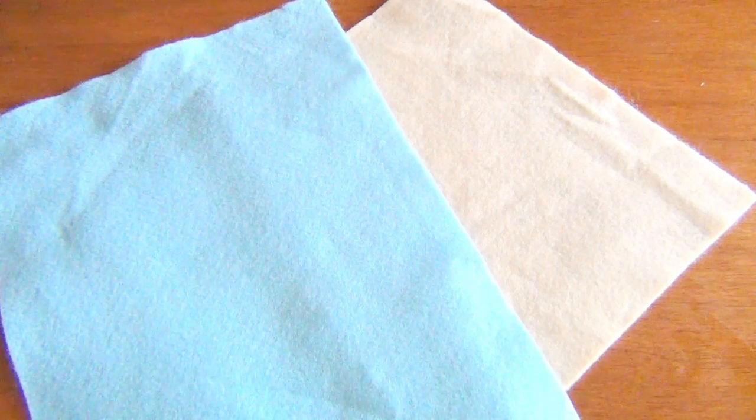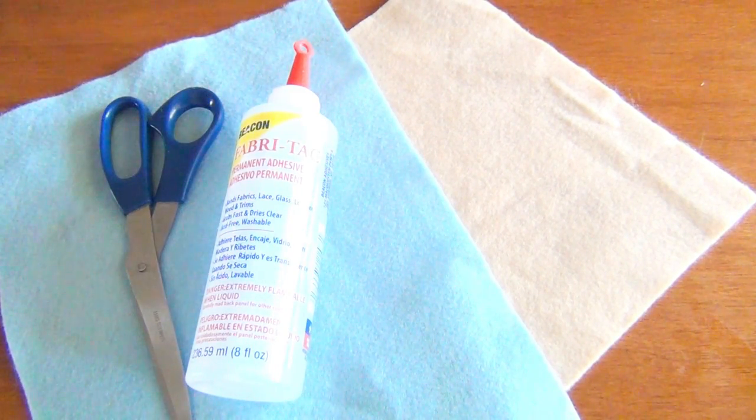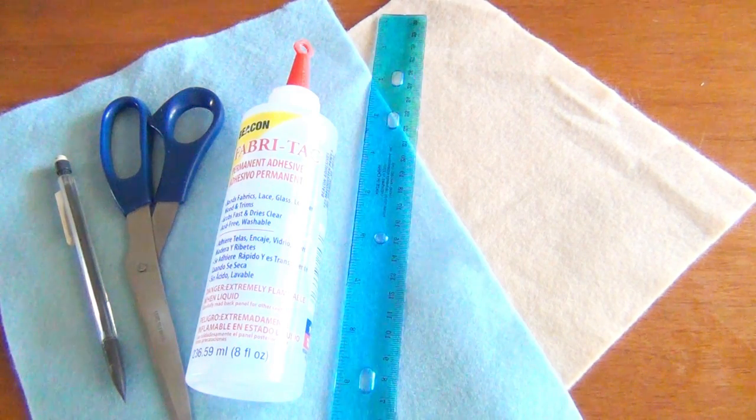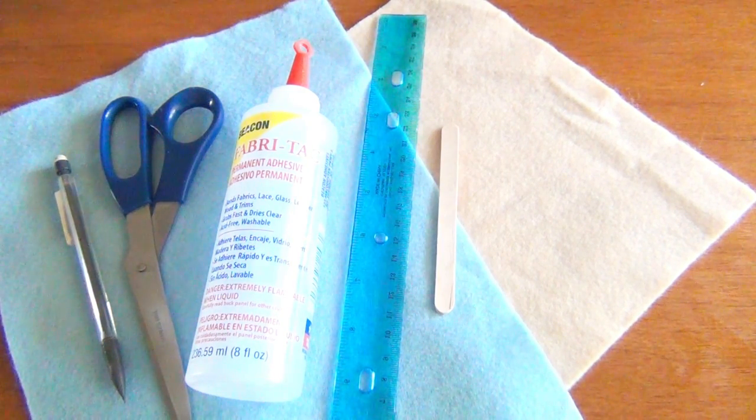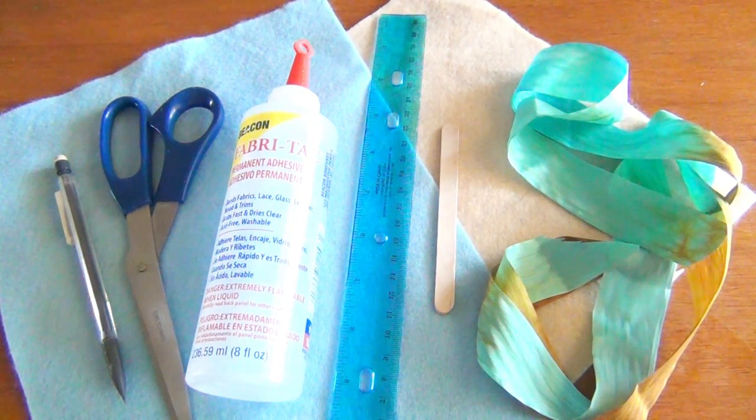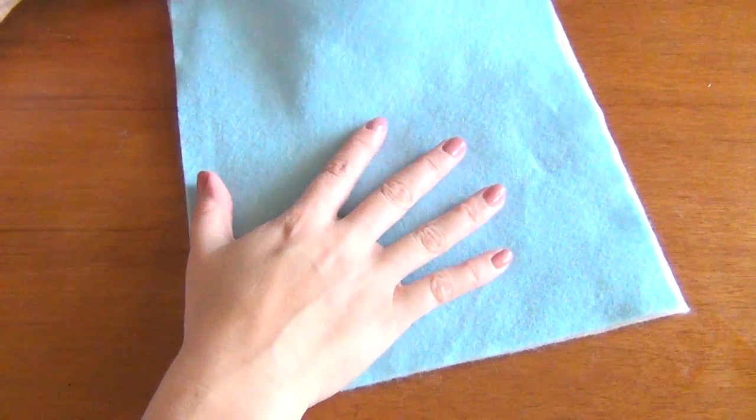For the next project you'll need two different colors of felt, your Fabri-Tac, scissors, a pencil, a ruler, some popsicle sticks, and of course your gorgeous ribbon. I'm using a nice wide ribbon for this project.